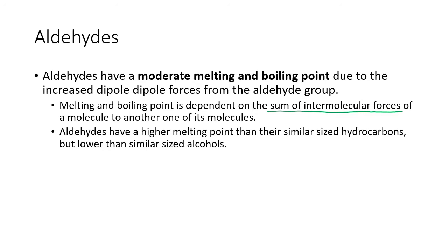Aldehydes have higher melting and boiling points than similar-sized hydrocarbons, but lower than similar-sized alcohols. Why do alcohols have a higher melting and boiling point? Not just because they have hydrogen bonding — the correct answer is that they have a greater sum of intermolecular forces because they also have hydrogen bonding. You must say 'sum of intermolecular forces.'